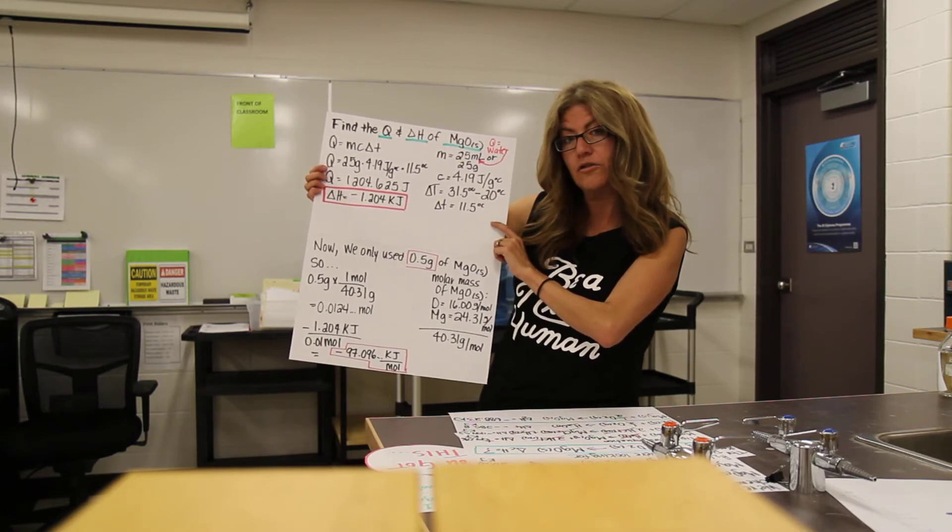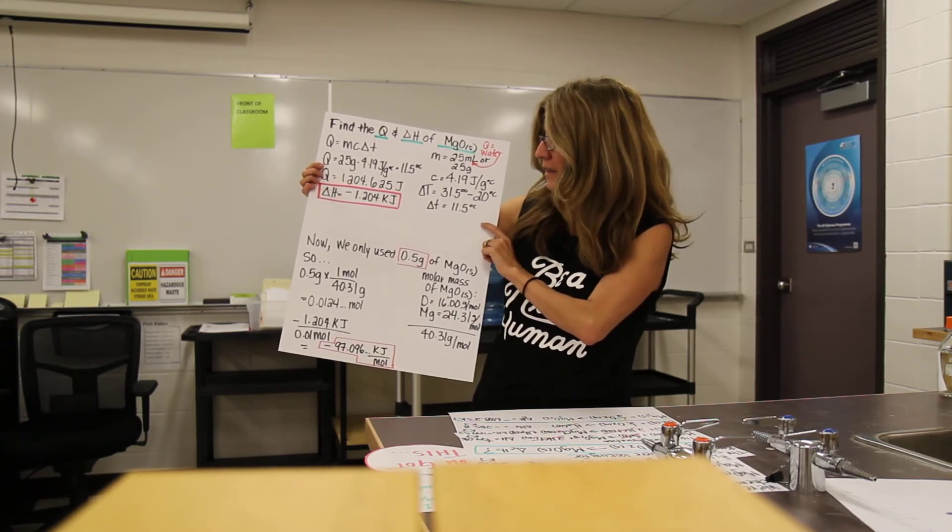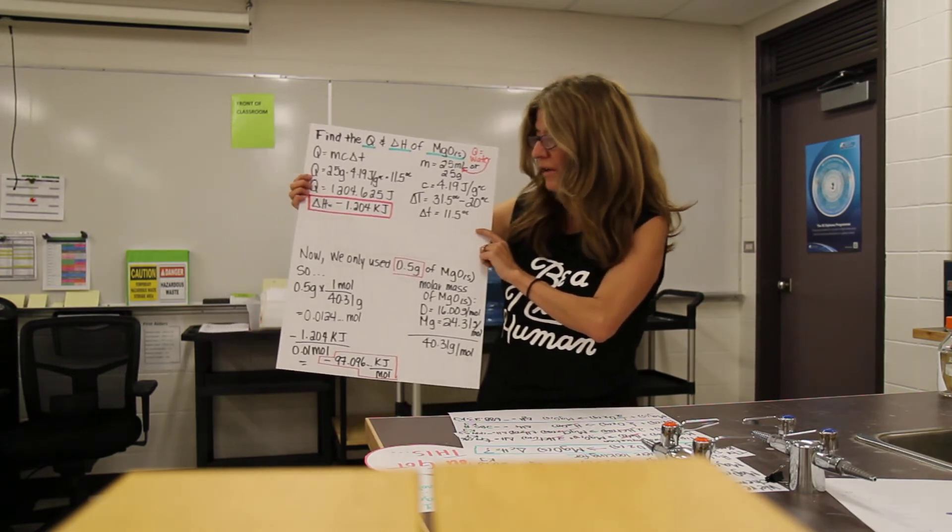And we're going to change that to kilojoules and the delta H, right? So our delta H, our change in enthalpy, is going to be negative 1.204 kilojoules.